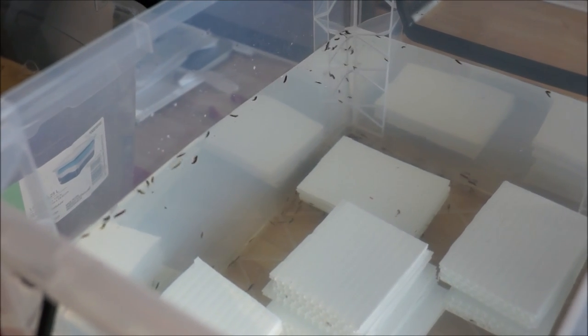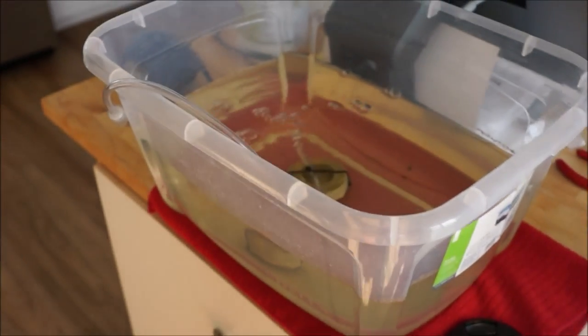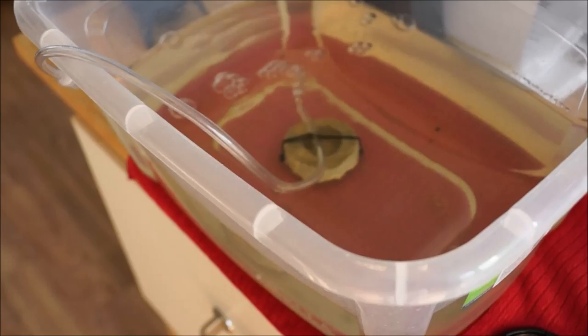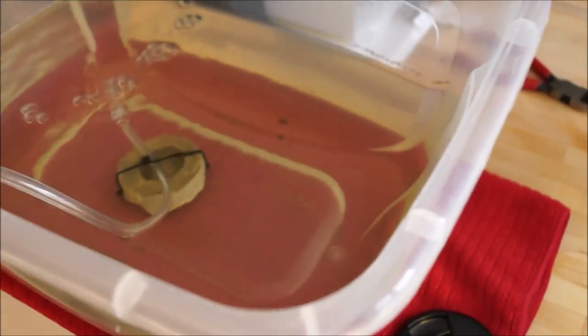Here are the pods, and here's the brine shrimp container. Those brine shrimp are about five days old. It's not the container I used to hatch them, obviously, but after the 24 to 36 hours it takes me to hatch the eggs, I put the brine shrimp in this container.